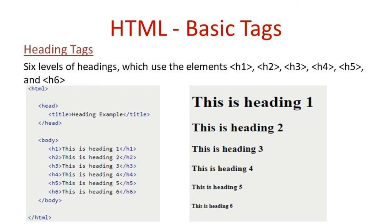Now we will discuss different types of tags one by one. First is the heading tag. There are six levels of headings ranging from h1 to h6. h1 is the maximum size and most important heading, while h6 is the minimum size and least important. h2 to h6 can be used as subheadings.